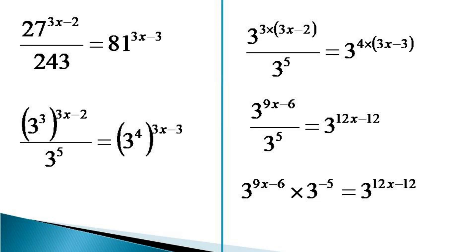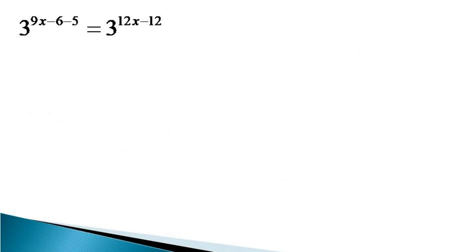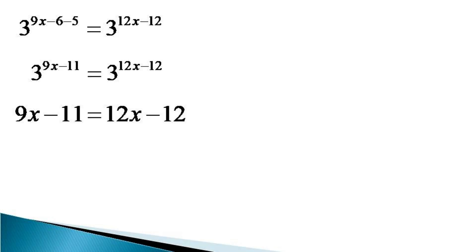Now on the left hand side the indices are added, and the equivalent equation becomes 3 raised to the power 9x minus 11, equal to 3 raised to the power 12x minus 12. Since the bases are equal on both sides, the indices also must be equal, which makes 9x minus 11 equal to 12x minus 12.